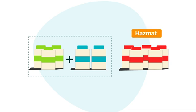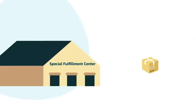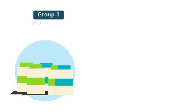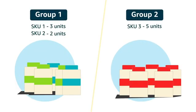For example, SKUs considered to be hazmat or hazardous materials cannot be packed with other SKUs, since hazmat SKUs are shipped to special fulfillment centers that can safely receive them. You are then prompted to provide box content information for each group of SKUs that can be packed together.